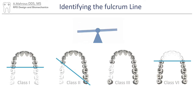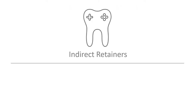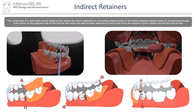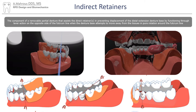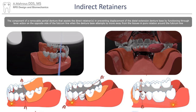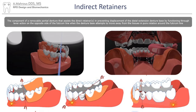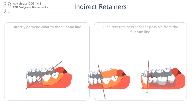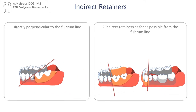Now that we understand fulcrum lines, let's talk about how we can manage the consequences of RPD rotation around them. First, let's talk about indirect retainers. Indirect retainers are used to address the issue resulting from the movement of the denture base away from the edentulous span, which results in downwards movement of the framework and eventually trauma of the soft tissues. Despite being called retainers, indirect retainers are actually rests.